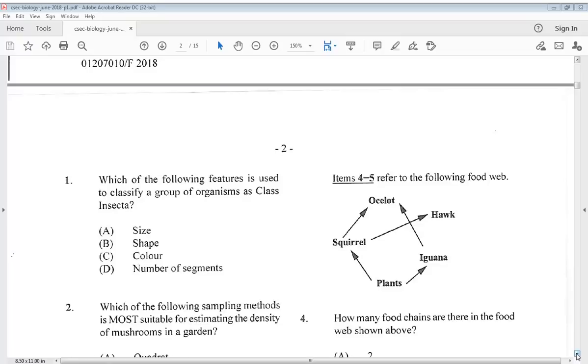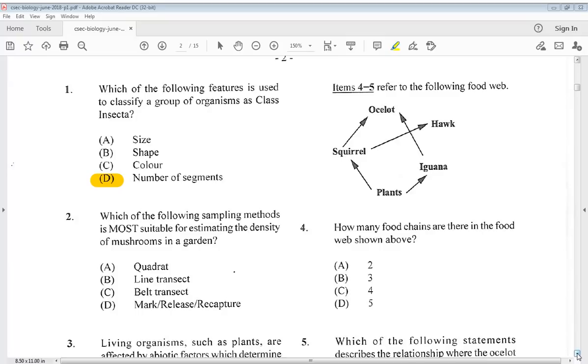Let's get into the first question. It says, which of the following features is used to classify a group of organism as class insecta? This question is very popular so we know the answer is going to be the number of segments. Two says, which of the following sampling methods is most suitable for estimating the density of mushrooms in a garden? The answer is A, quadrat.